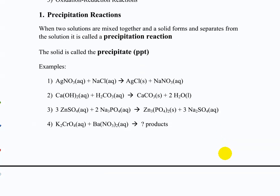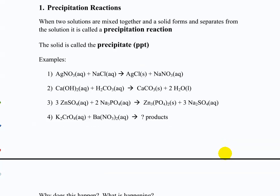Precipitation reactions: you do a reaction and a solid forms that is no longer soluble. That's when you see something turn cloudy, see particles coming out, or particles floating on the surface — you've made a solid from two aqueous reactants. For example, silver nitrate aqueous solution reacts with sodium chloride aqueous solution to form silver chloride, which is insoluble and falls out of solution as a precipitate, while sodium nitrate stays in solution.